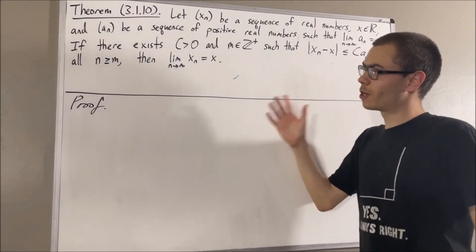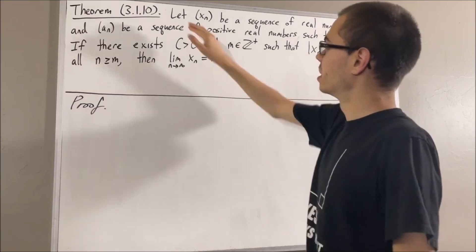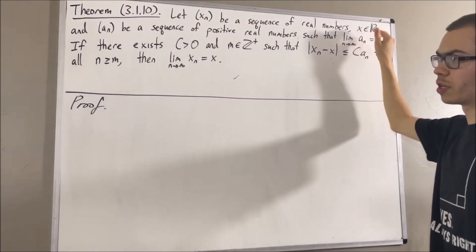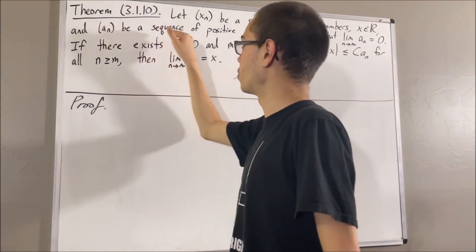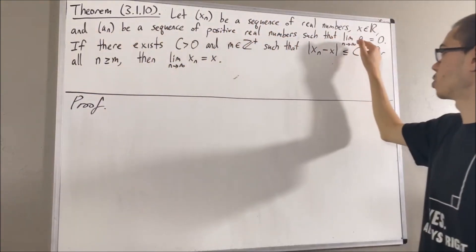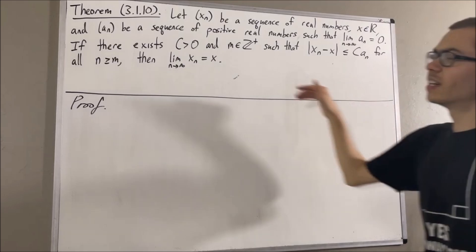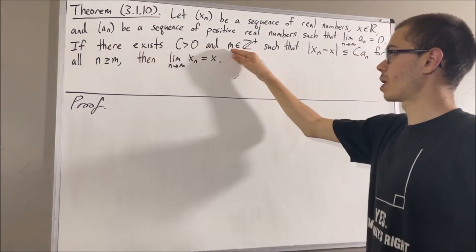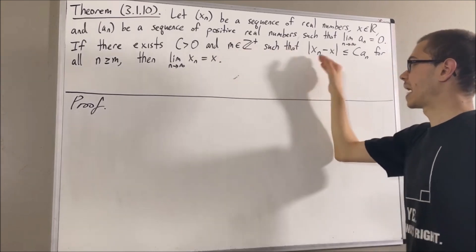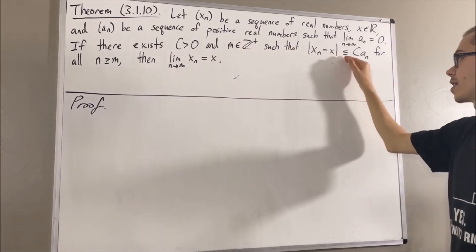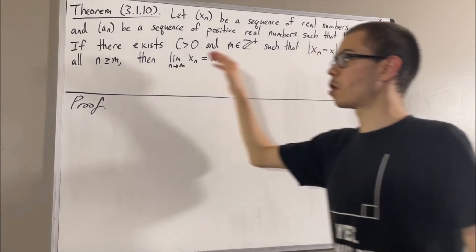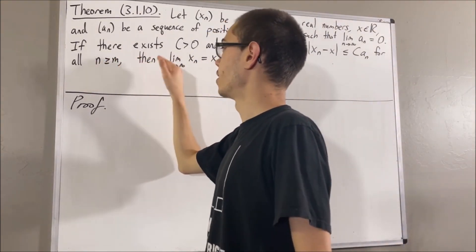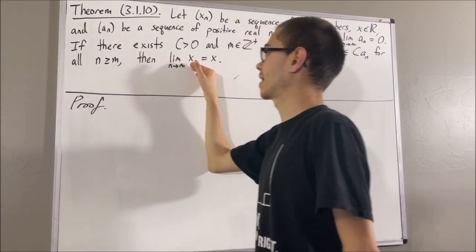In this video, we are going to prove the following theorem. Let xn be a sequence of real numbers, let x be a real number, and let an be a sequence of positive real numbers that converges to zero. If there exists a positive real number c and a positive integer m, such that the absolute value of xn minus x is less than or equal to c·an for all positive integers n greater than or equal to m, then xn converges to x.